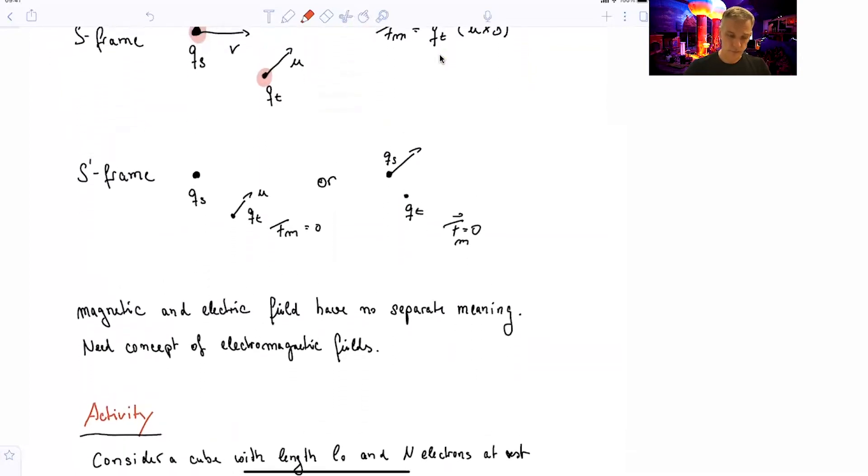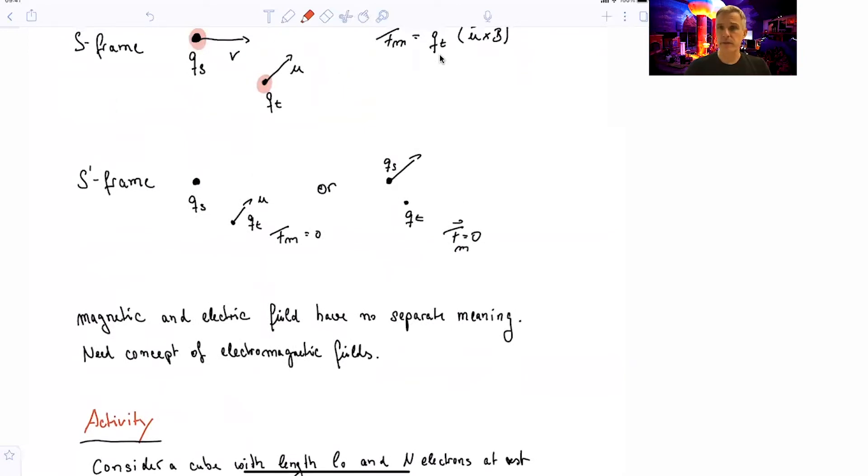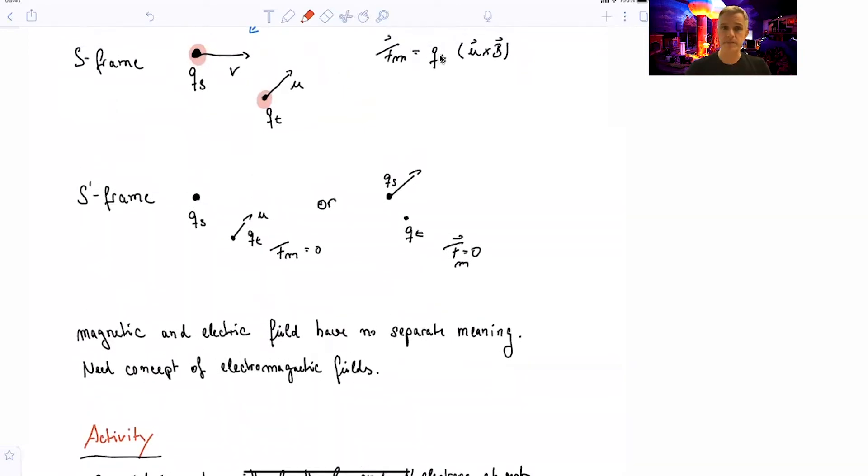However, if I now move into a reference frame where the source charge is stationary, a stationary charge is not creating a magnetic field. So the magnetic field is 0. Hence, the magnetic force on the test charge is 0.